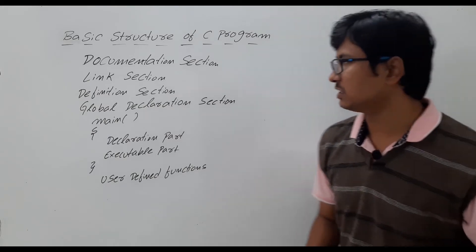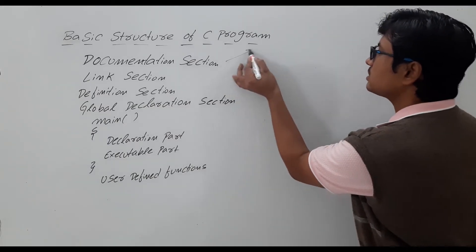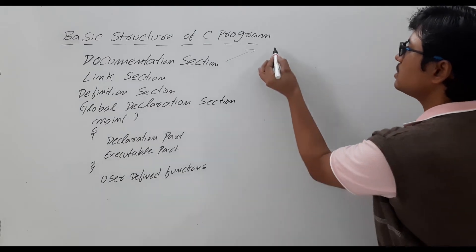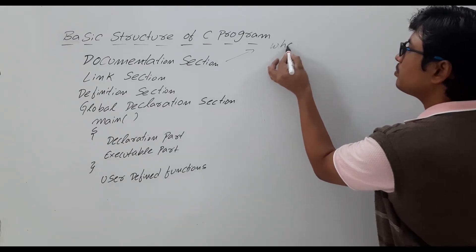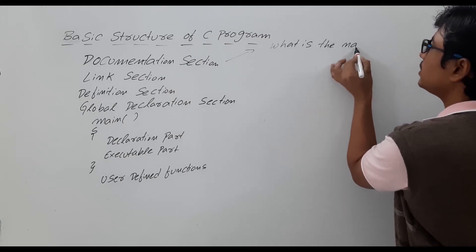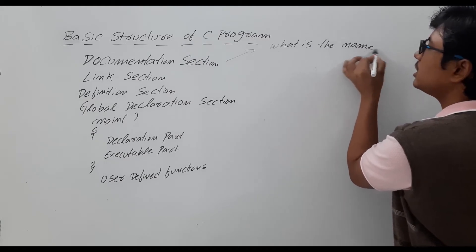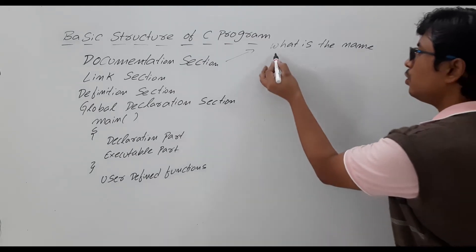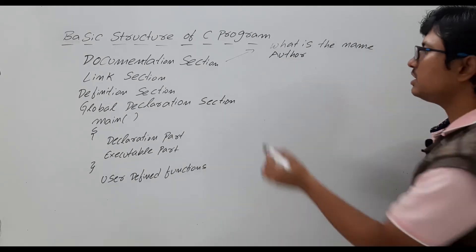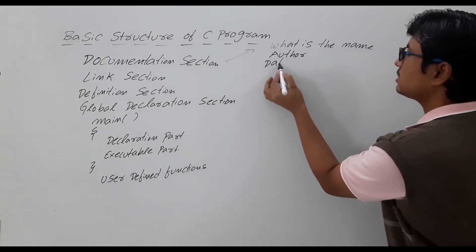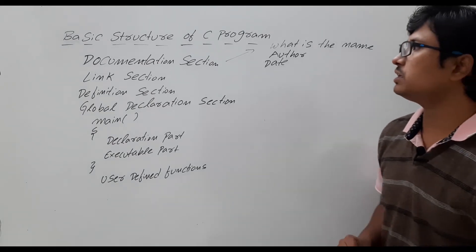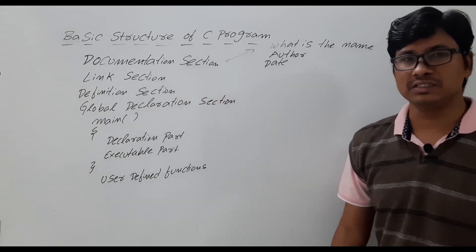The documentation section consists of various information such as the name of the program you are writing, who is the author of that program, and on which date he or she has written this program. All this information, if you want to write, you can write it in the documentation section.